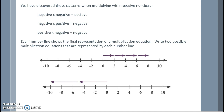Pause the video and see if you can come up with a couple. The first one here, I see I have 4 copies of 2, and then we also could do — since we know a negative times a negative is a positive — we could remove 4 groups of negative 2, and we know that would bring us to a positive. The second line here, we have 2 groups of negative 5, or remove 2 groups of positive 5, which would give us also negative 10.